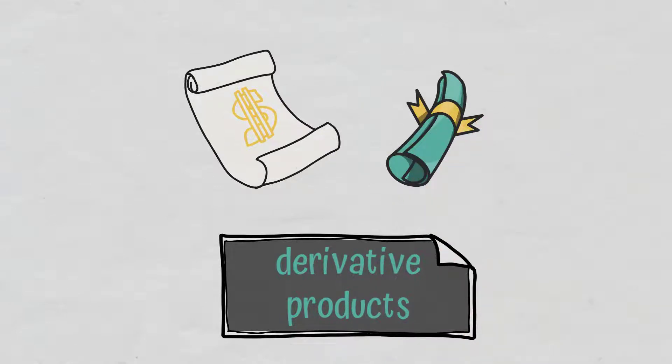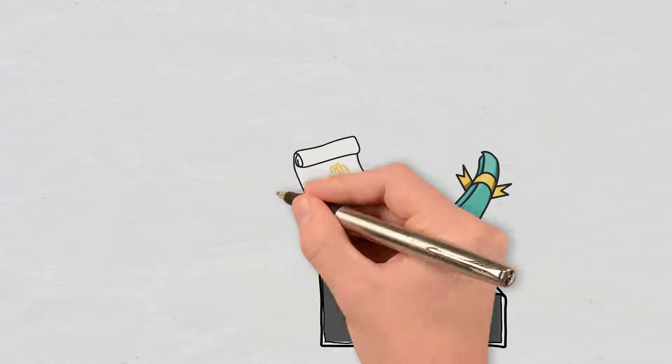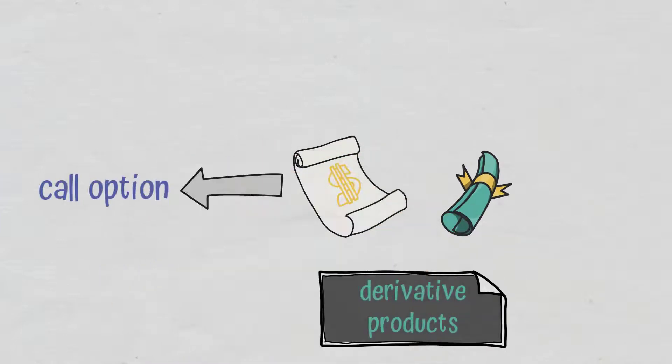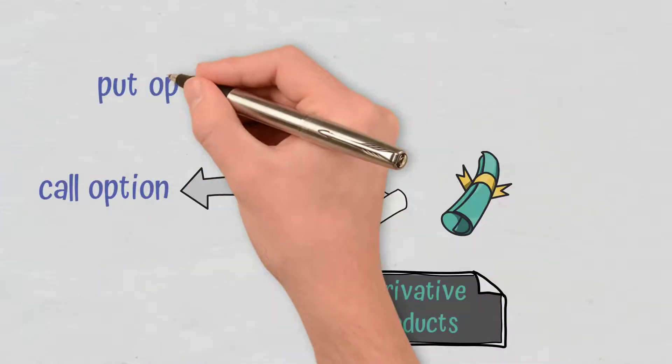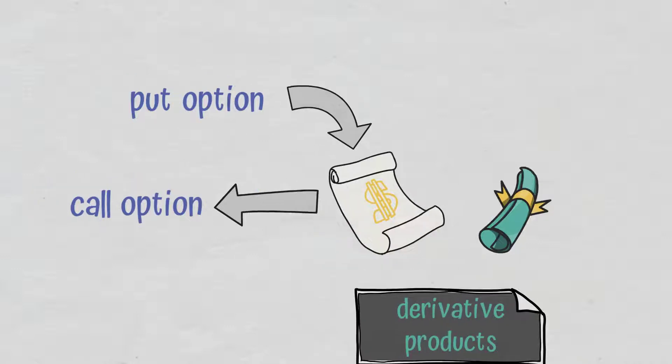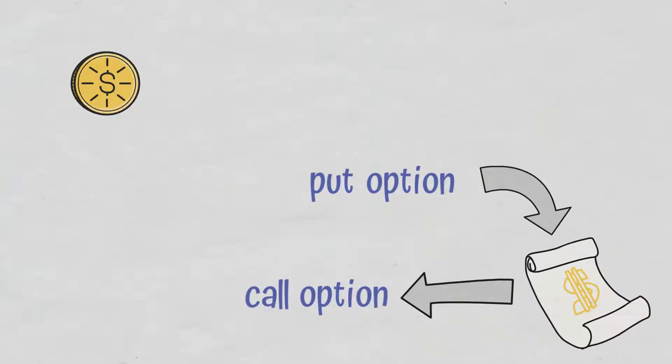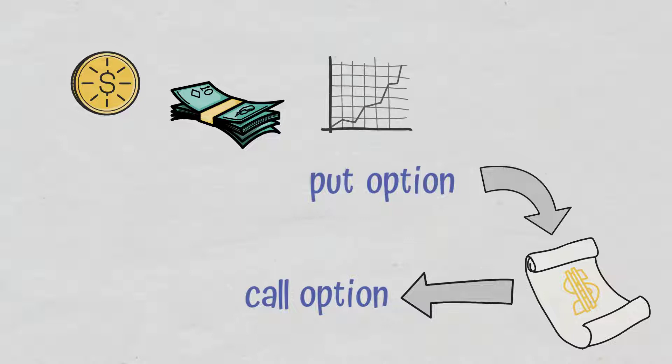For instance, instead of buying a stock, a company may buy a call option and sell a put option on the same stock. This gives the company the chance of using several financial vehicles at the same time instead of a single investment asset.